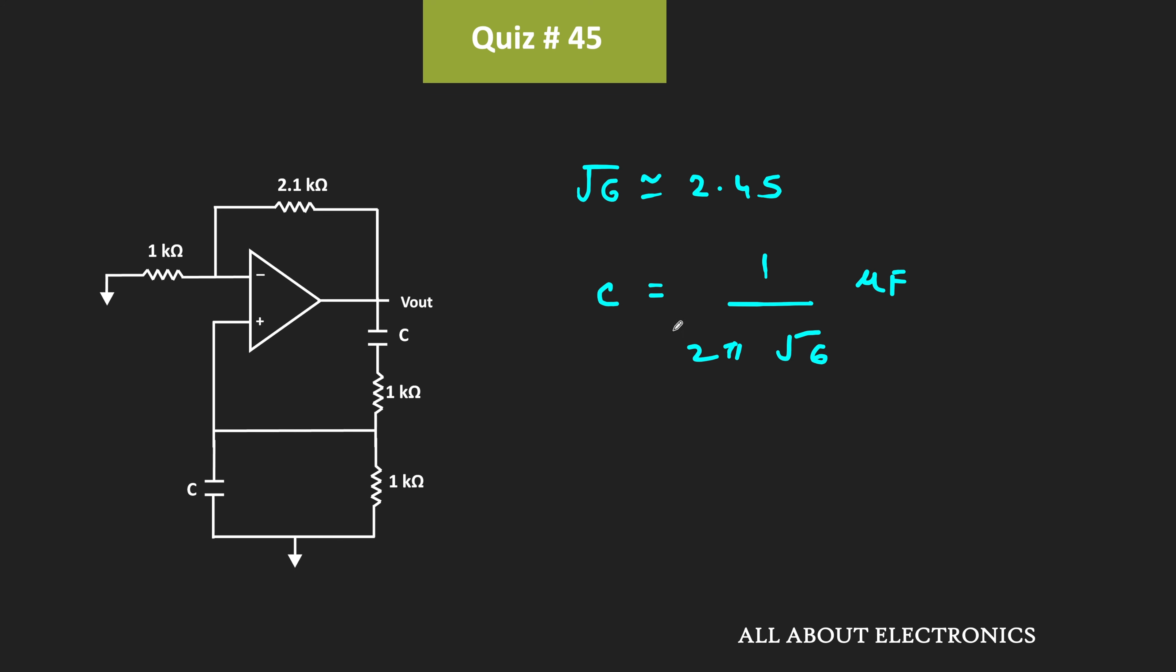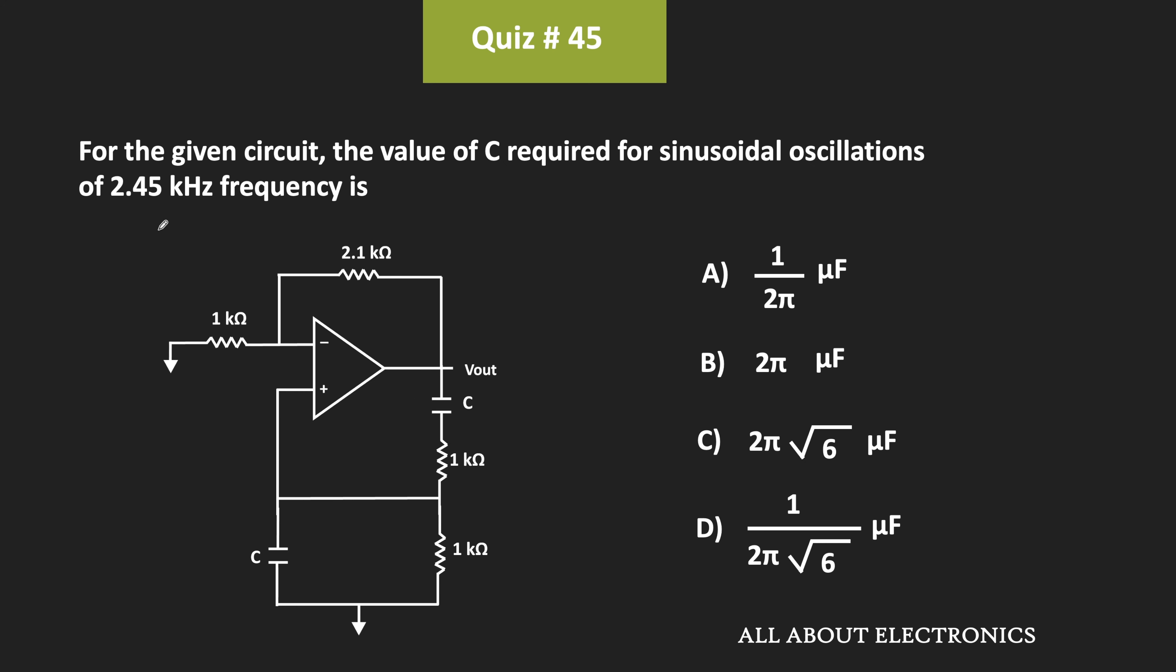That means with the given value of C, the oscillation of the given oscillator is equal to 2.45 kHz. And hence, for the given question, D is the correct answer.